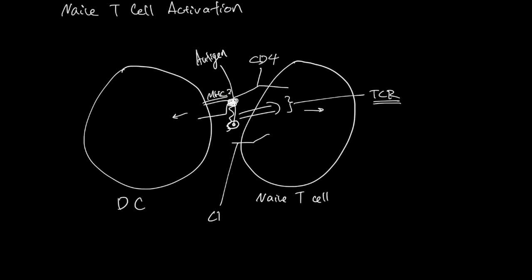The naïve T cell expresses a protein called CD28, and the dendritic cell signaling leads to expression of B71 and B72, also called CD80 and CD86. The B71 and B72 bind with the CD28, resulting in more stimulation. The naïve T cell will start expressing IL-2 receptor and IL-2 ligands, and the binding of IL-2 ligand to IL-2 receptor adds even more stimulation signals.